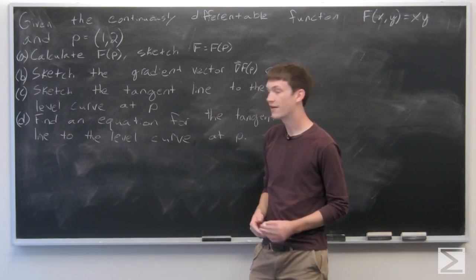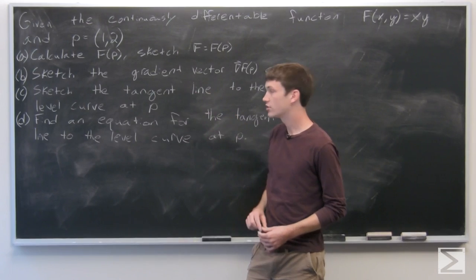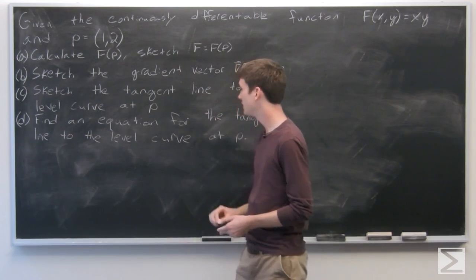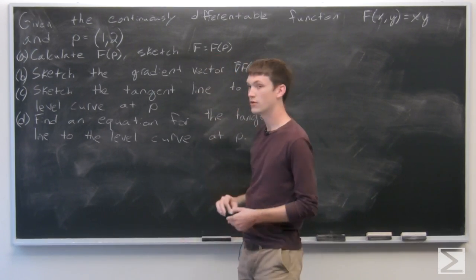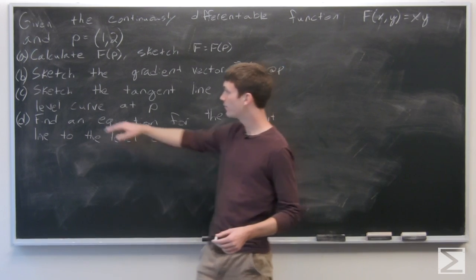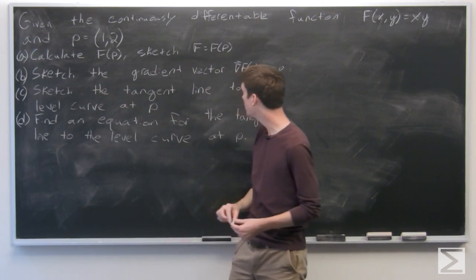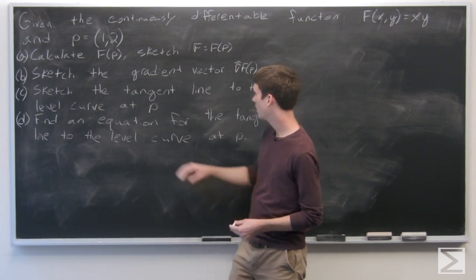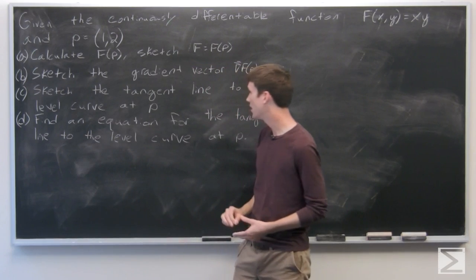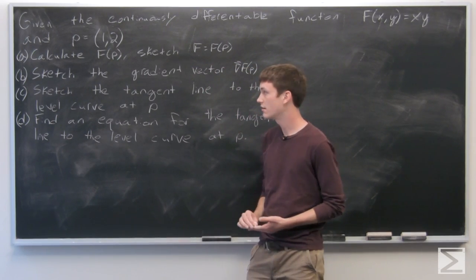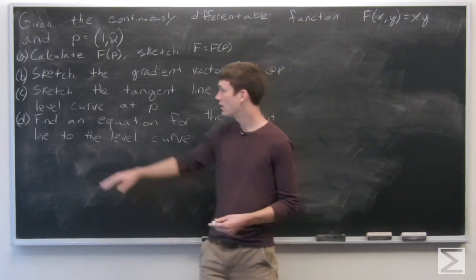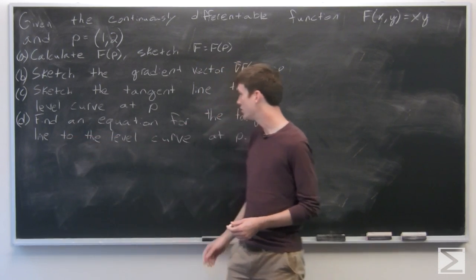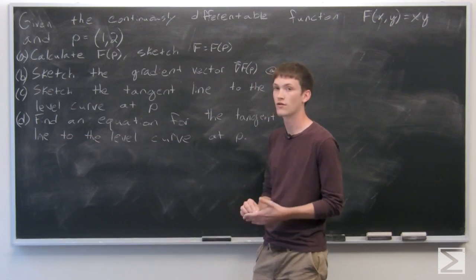We're asked to calculate f(p) and sketch the level set f = f(p). We're asked to sketch the gradient vector of f at p and sketch the tangent line to the level set at p. And finally, find an equation for the tangent line to the curve at p.